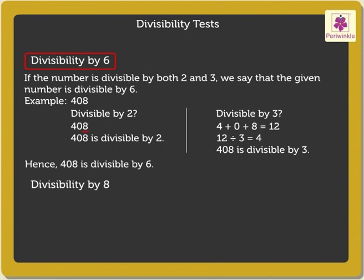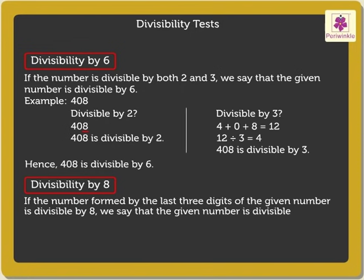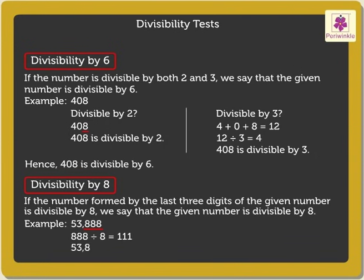Divisibility by 8. If the number formed by the last three digits of the given number is divisible by 8, we say that the given number is divisible by 8. For example, look at the number 53,888. Its last three digits form the number 888, which is divisible by 8. Thus, 53,888 is divisible by 8.